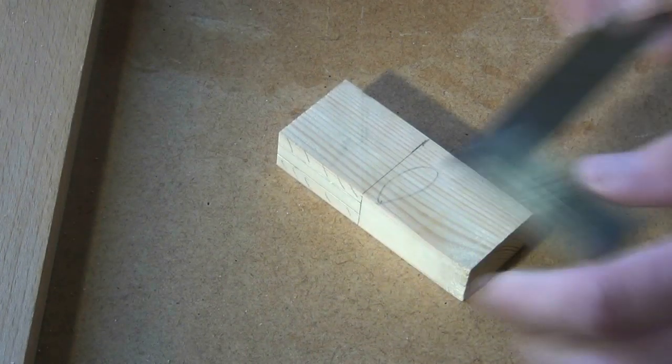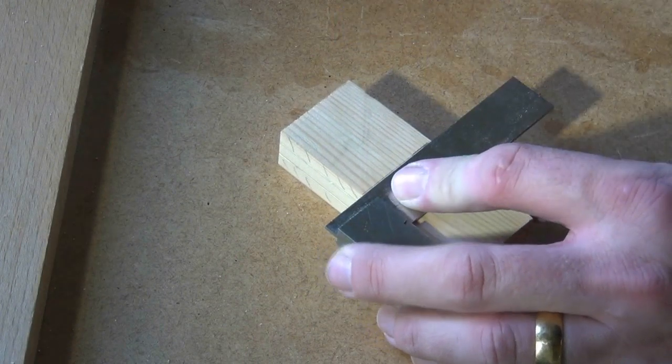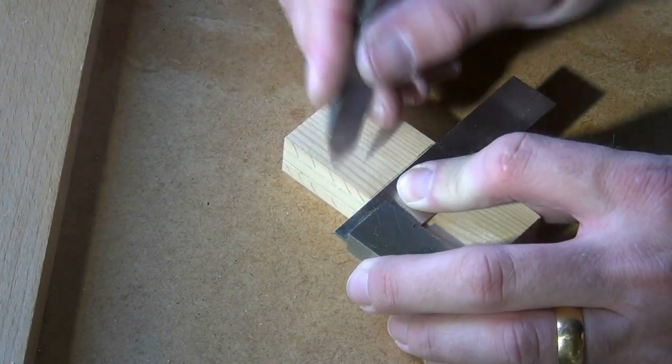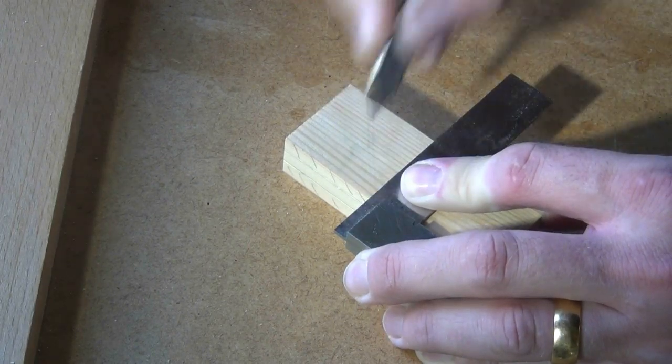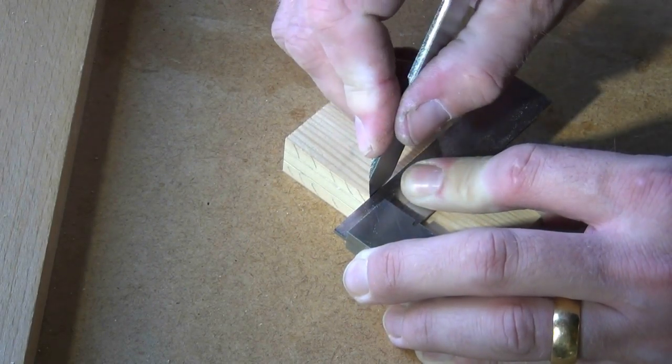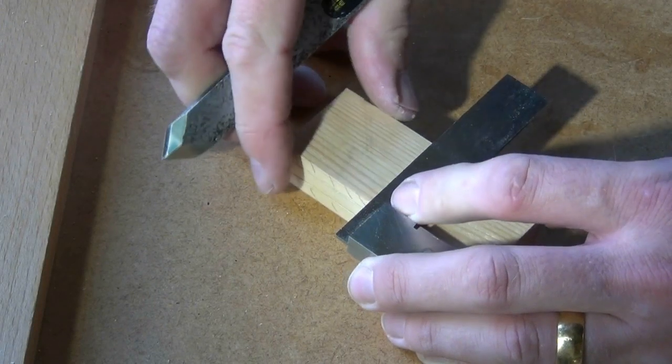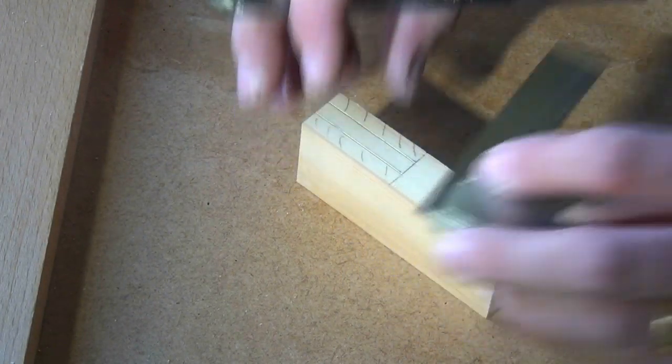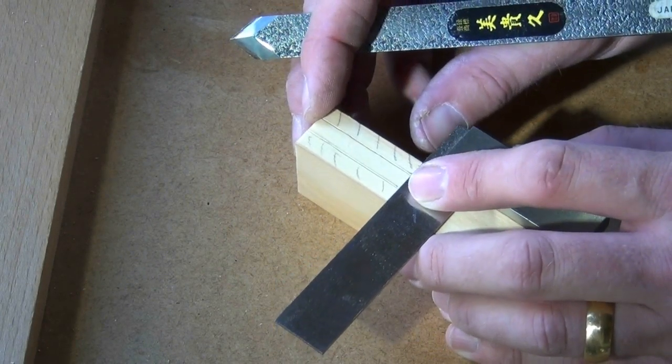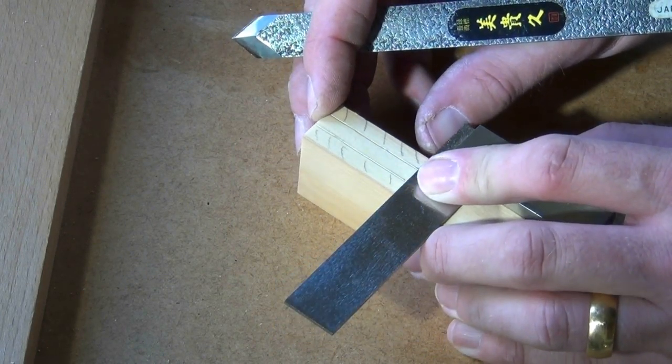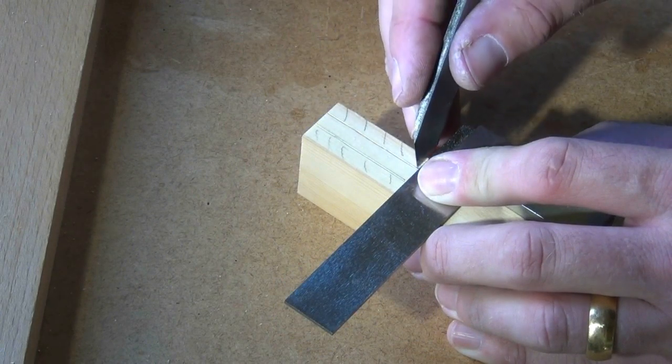In order to get crisp shoulders, I'm now going to replace my pencil line with a knife line. And this is just on the component that's having a tenon on it, because obviously where the line is where we're cutting the open mortise, we're not going to be removing that material so we don't want to leave a knife line behind.